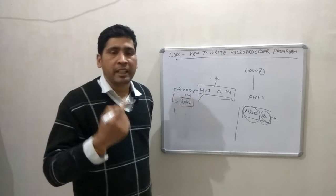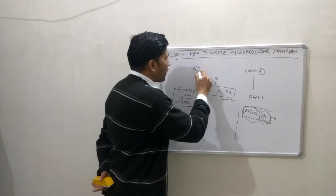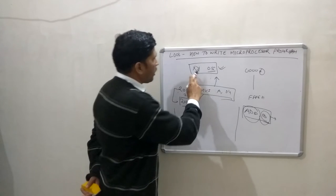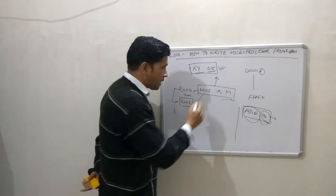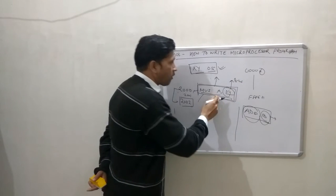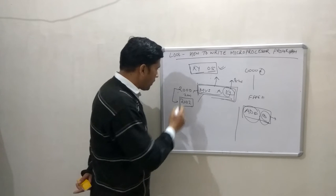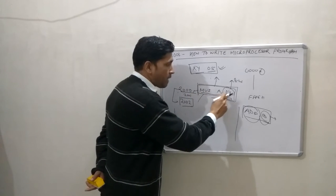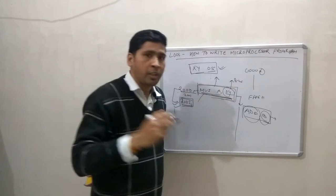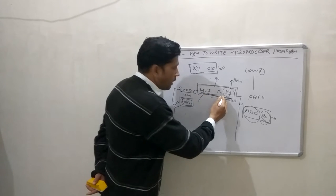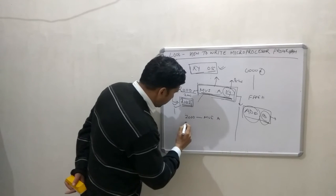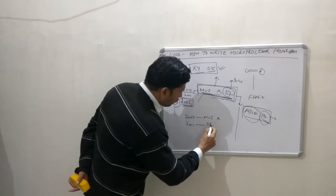In a two-byte instruction, along with the instruction there should be 8-bit data. For example, if I write instruction XY with 8-bit data 05, this is called a two-byte instruction and it will require two memory addresses. In the same case, MVI A, 04 — here 04 represents 8-bit data, so this instruction requires two memory addresses. That is why in the machine, at address 2000 when you write MVI A, 04 and press enter, the next RAM address shown is 2002, because this is a two-byte instruction requiring two memory addresses.